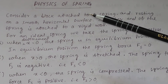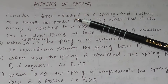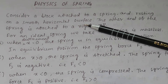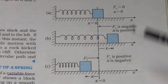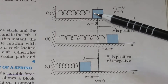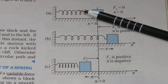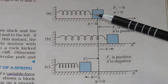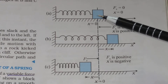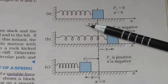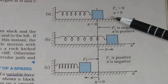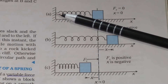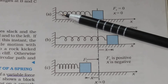In this video we will discuss the physics of springs. Consider a block attached to a spring and resting on a smooth horizontal surface. The block is attached to the spring, and the spring-block system is on the smooth horizontal surface. The other end of the spring is attached to a rigid wall.